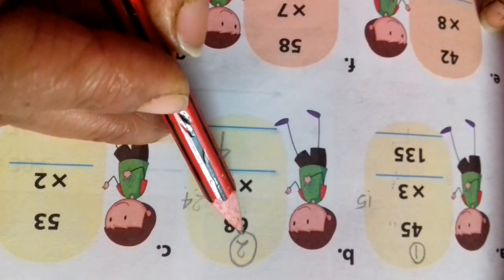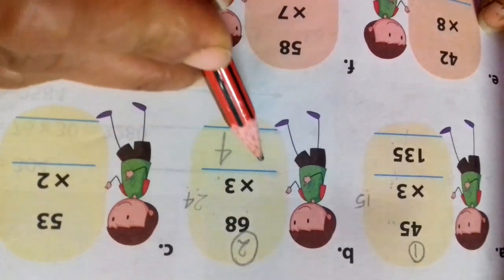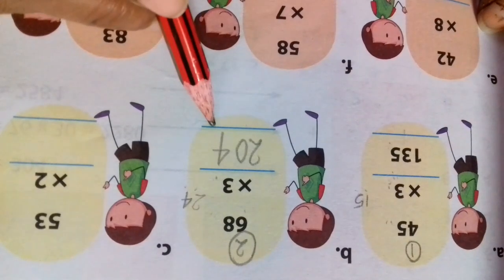Now in 18, we will add carry plus. 18 plus 2, 20. Right here 20. We will write the whole number here. Our answer is 204.